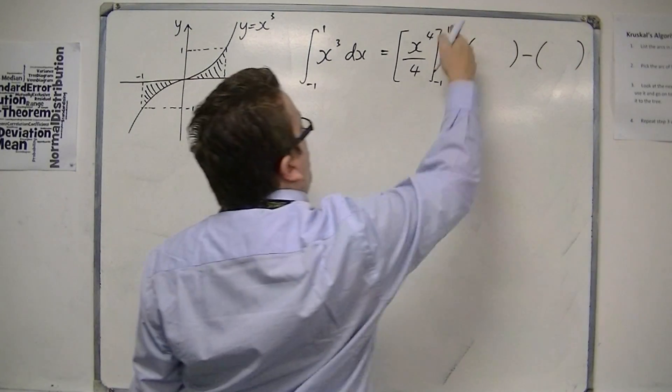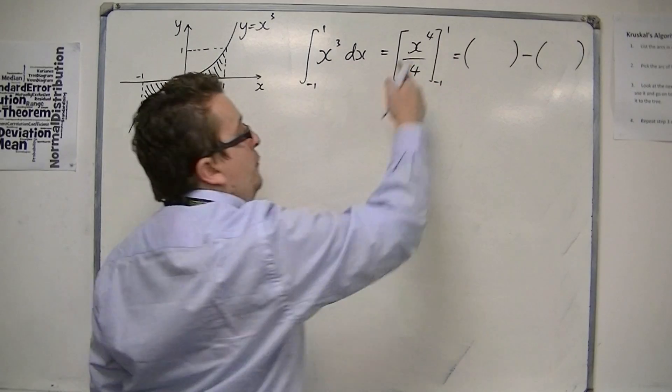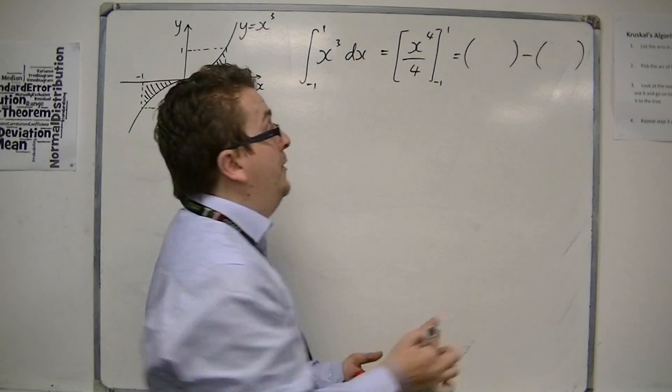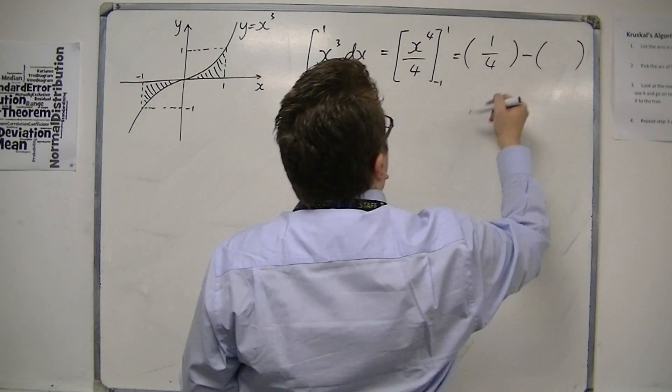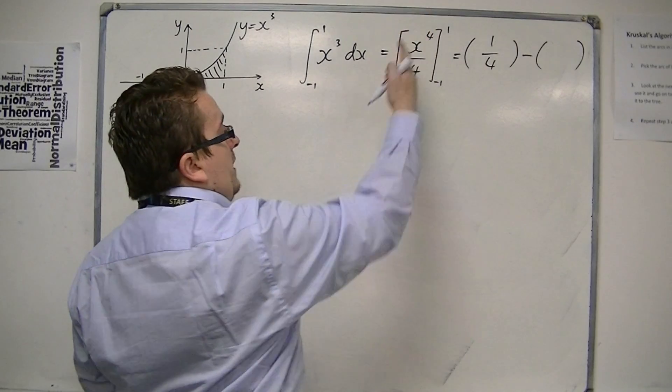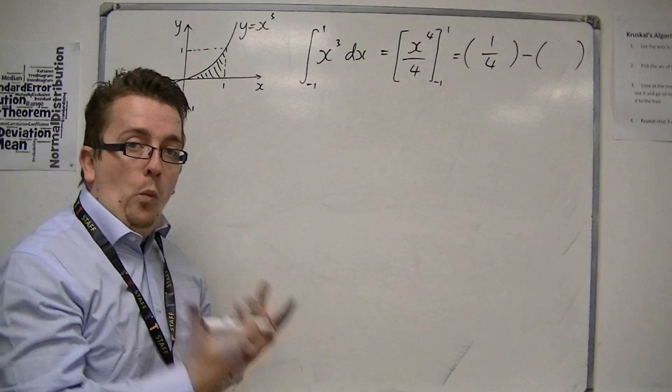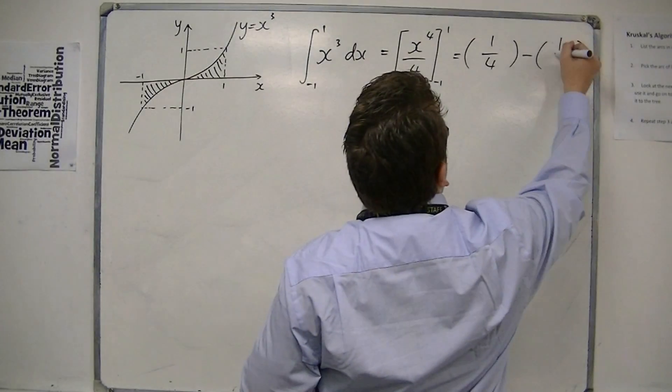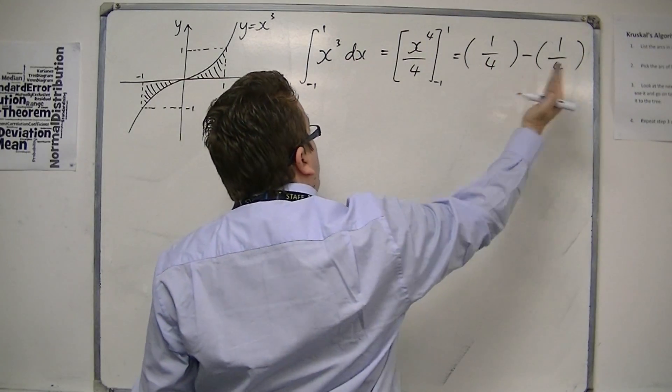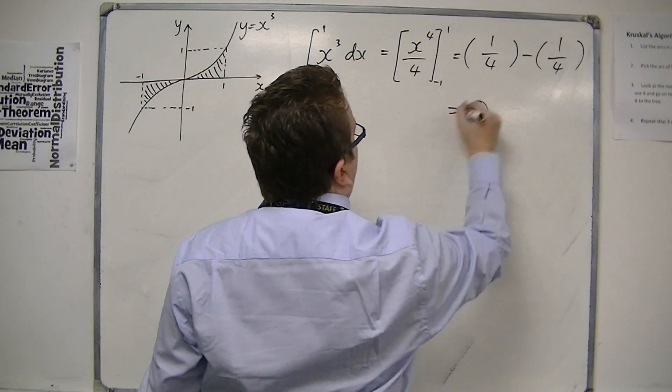So I'm going to substitute in 1 first and get 1 to the 4 over 4, which is just 1 quarter. And then I substitute in minus 1 and I get minus 1 to the 4, which is 1 over 4. So that's just a quarter as well. And then I've got a quarter, take away a quarter, which is 0.